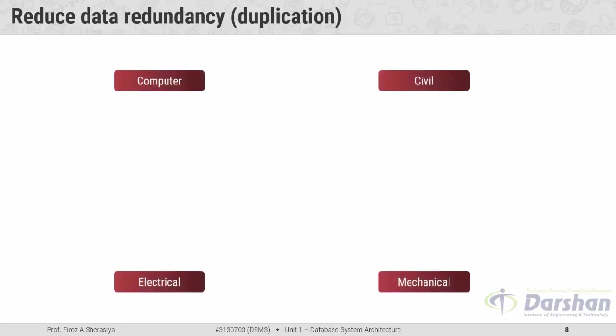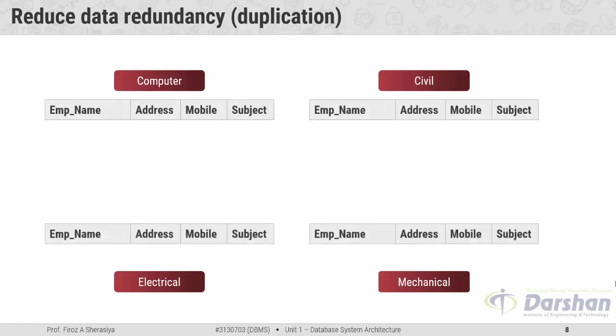Suppose a college has four departments: computer, civil, electrical, and mechanical. All four departments keep records of faculties who are taking lectures in the department. The data stored includes employee name, address, mobile number, and subject. Suppose a faculty is taking a lecture of a particular subject — for example PPS — in all four departments.